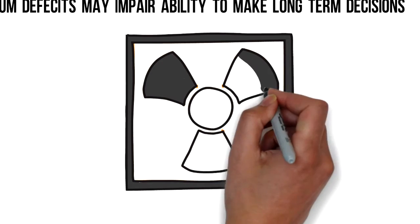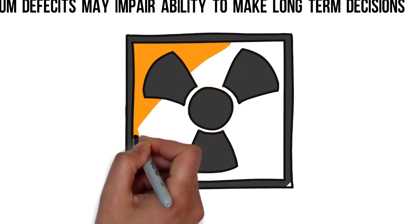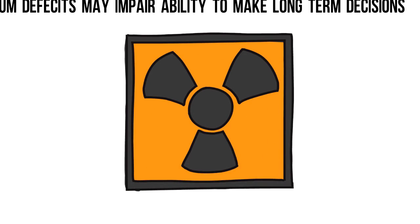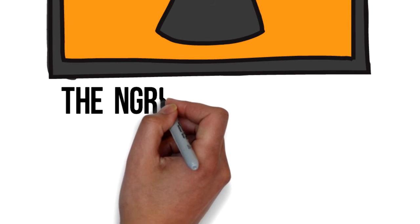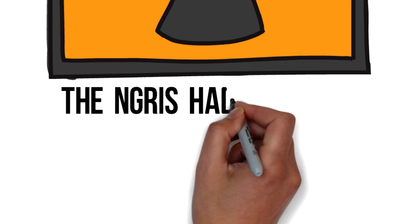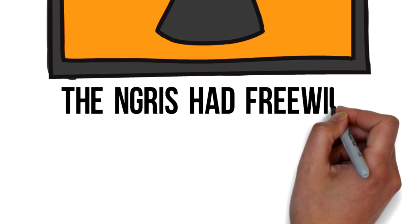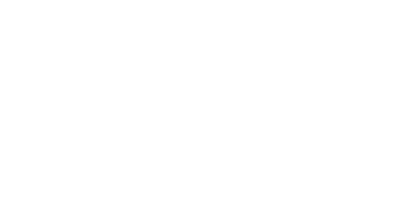In addition to this, Raine makes a few important notes of caution. So perhaps most importantly, Raine insists that these results do not show that NGRIs had no free will or that they couldn't help themselves when they committed the crimes.